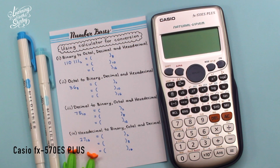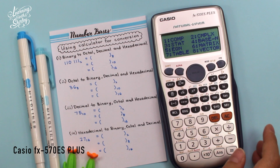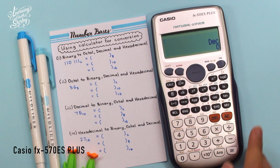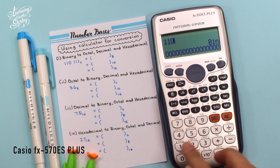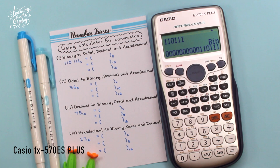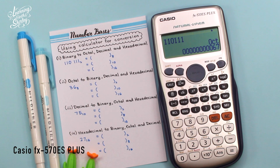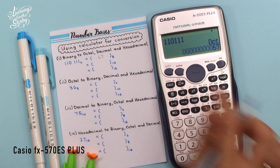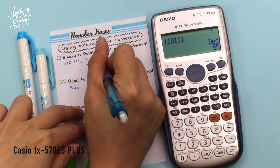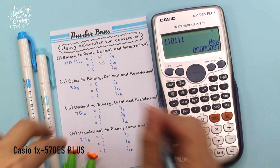So how to use the calculator for conversions? First, click ON and press the MODE button, then find base N — press 4 for base N. So here we have DEC. For this example, it's binary. I click BIN and enter 110111, then press equals. To change to base 8, press OCT — the answer is 67. To convert to base 10, press DEC — it's 55. And to convert to base 16 (hexadecimal), press HEX — it's 37.